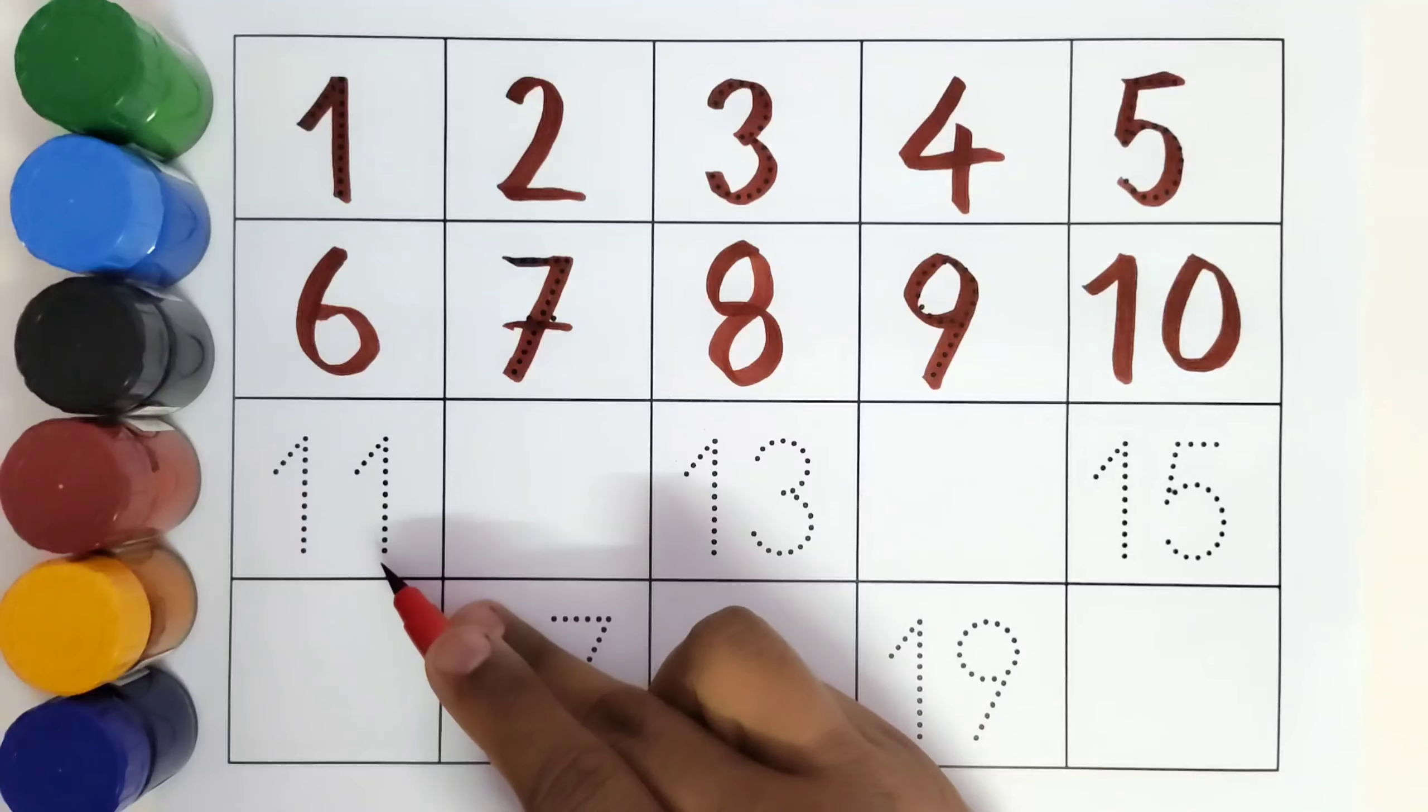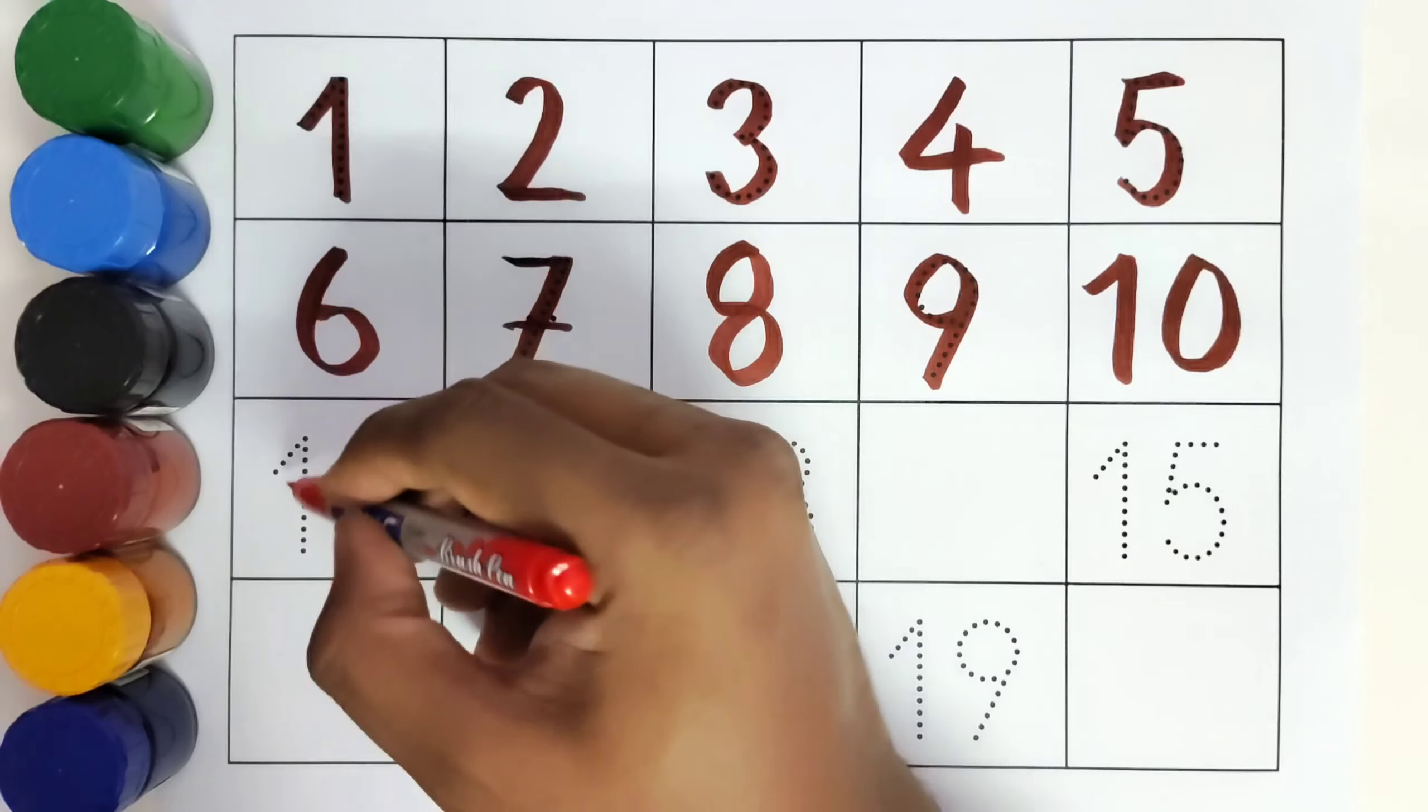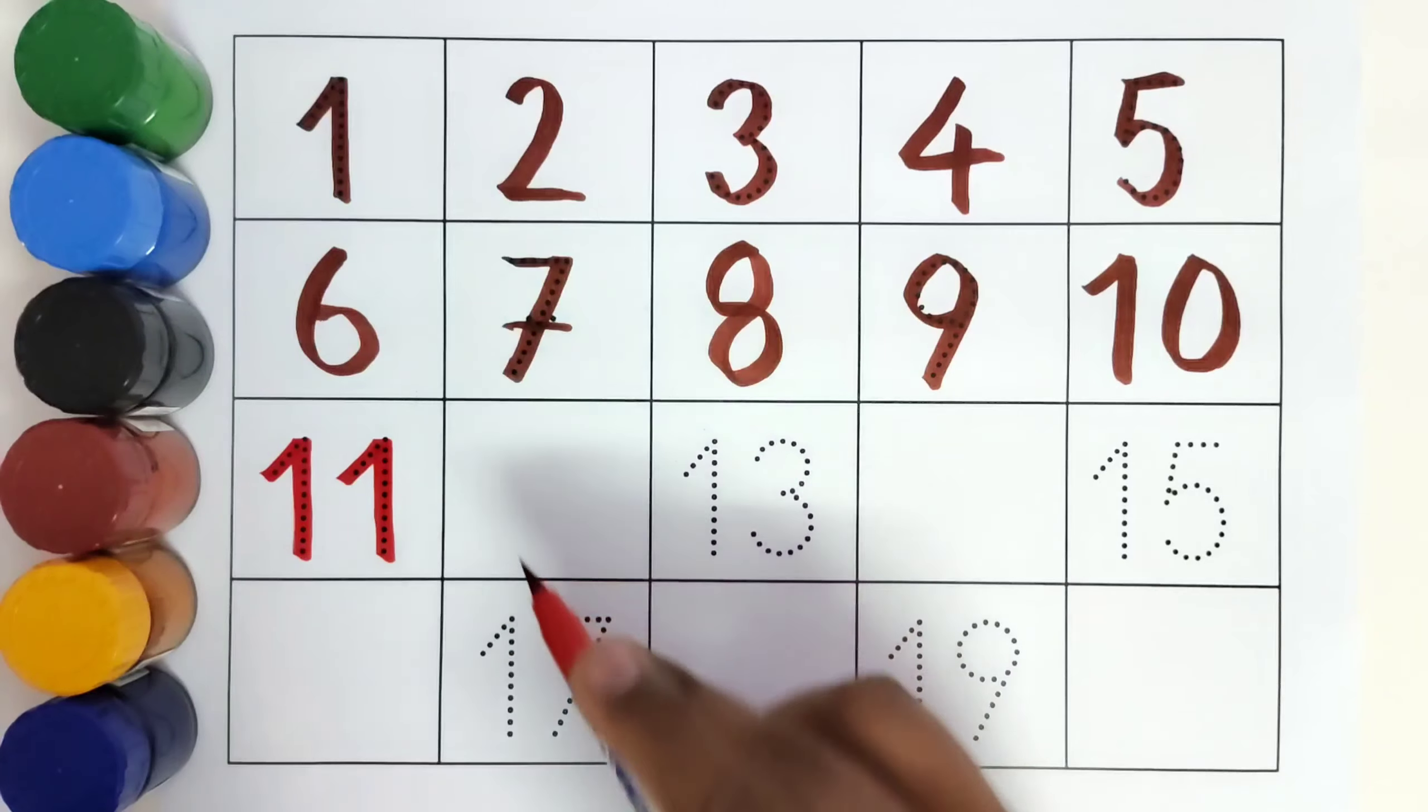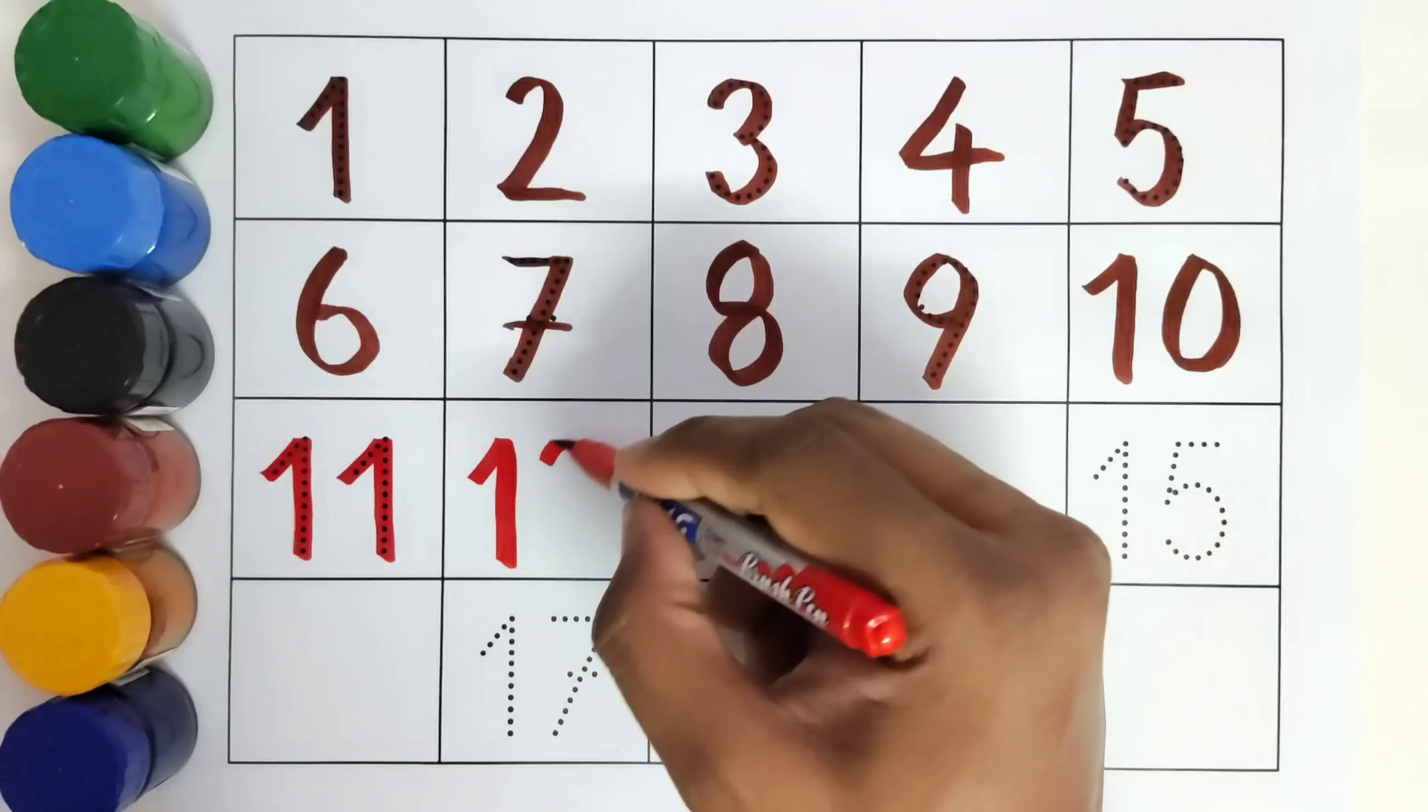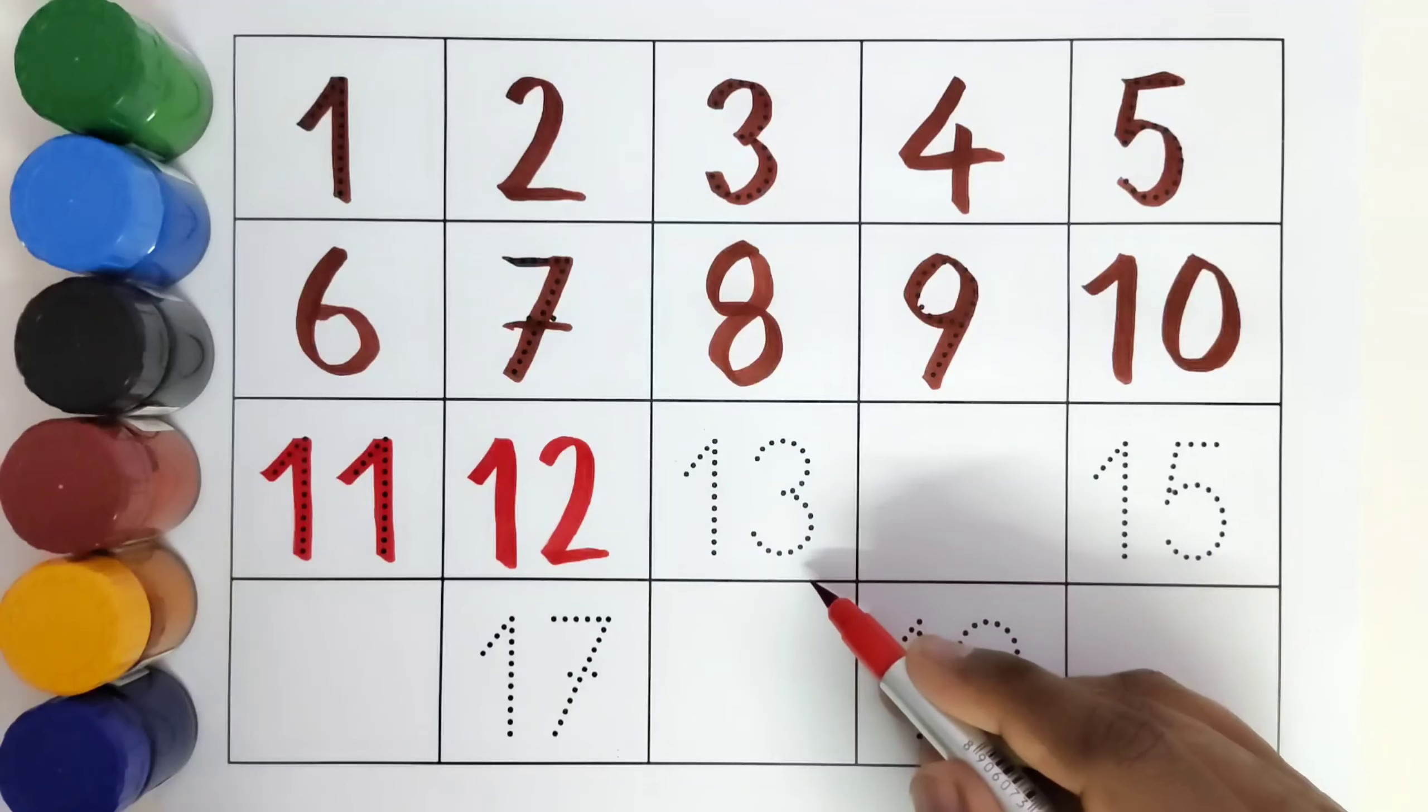This is one, eleven. What comes after eleven? Twelve. This is thirteen.